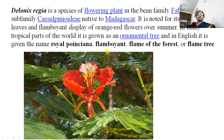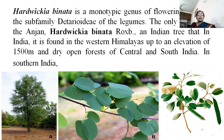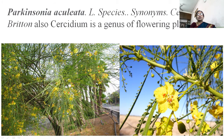Delonix regia is native to Madagascar and is noted for its fern-like leaves and flamboyant display of orange-red flowers over summer. In many tropical parts of the world it is grown as an ornamental tree. Hardwickia binata: the leaves of this plant are used as 'sona' leaves during Dussehra. Parkinsonia aculeata: the leaves are very much reduced; the function of leaves is taken over by the branches. Very small reduced leaves and yellow-red flowers are present, and it is a xerophytic plant.